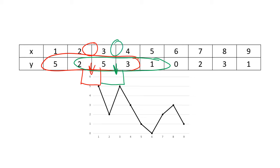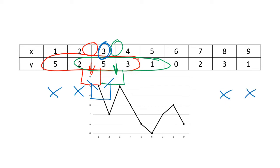So what we have to do is take the red and the green values and average them again to re-center us, so that we're centered on a value. Just like two-mean smoothing was like three-mean smoothing where you lost one piece of data, four-mean smoothing is like five-mean smoothing and you're going to lose a data point here and here. If you lose two at the beginning, you're going to lose two at the end.